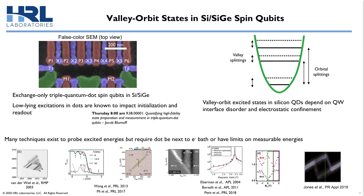We study exchange-only triple quantum dots in spin qubits in silicon-silicon-germanium heterostructures. This upper left image is a false color SEM of a six-dot device with overlapping gates. The green regions are the electron baths. M1 and M2 are the dot charge sensors, which measure the charge state. The Ts are the tunneling gates, which control the tunneling from the electron bath to the dot array. The Ps are the plunger gates, underneath which the individual electrons live. And the Xs are the exchange gates, which control the height of the tunnel barriers between the dots.